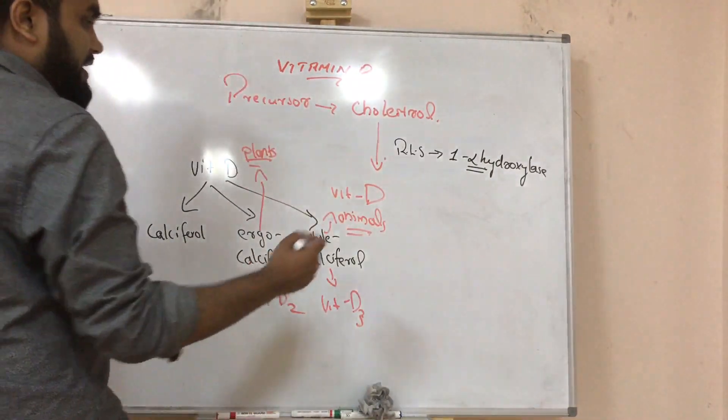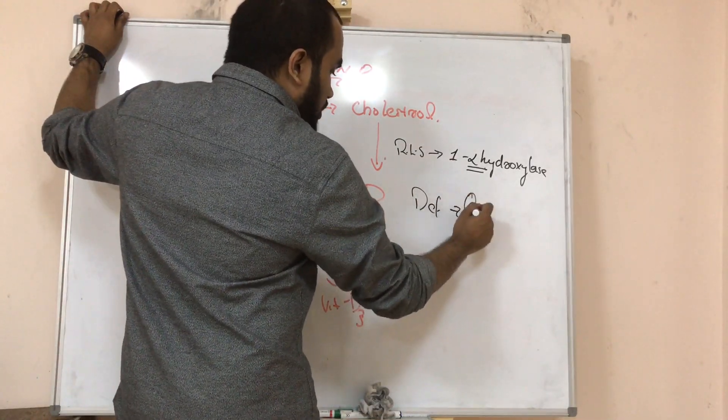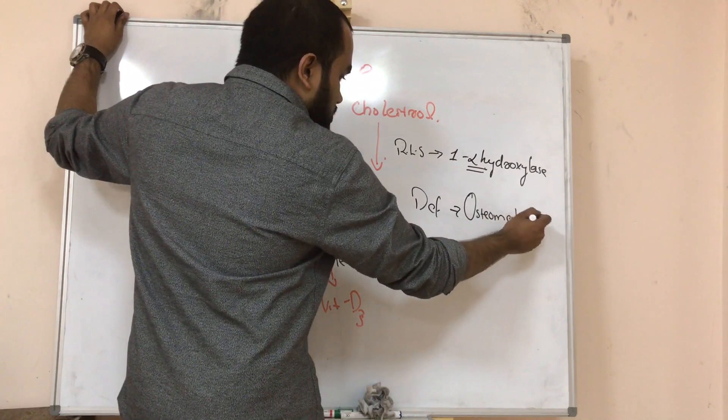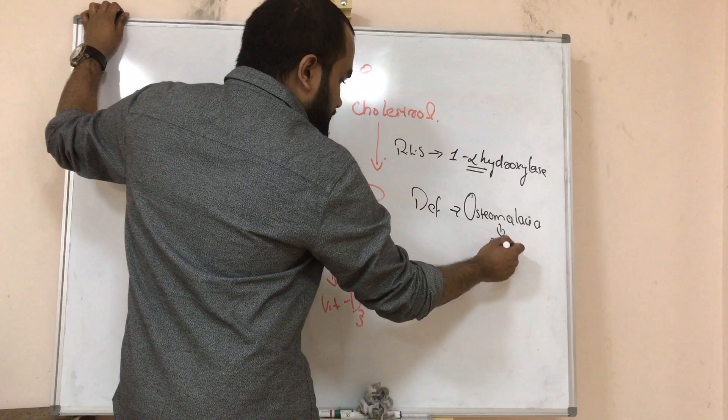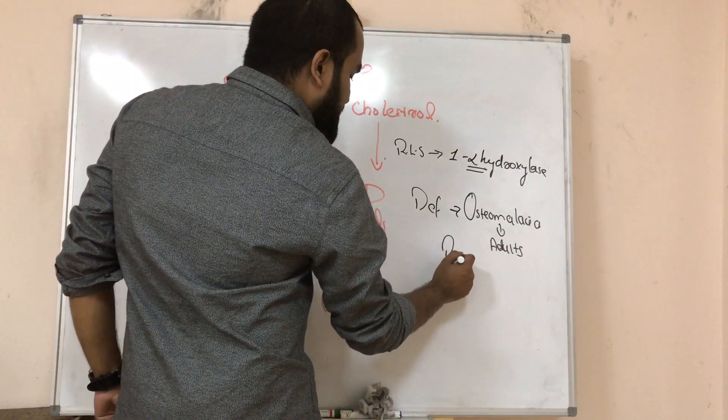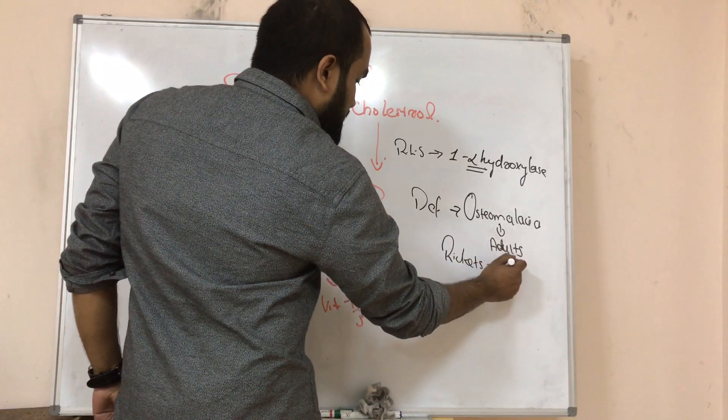Deficiency of vitamin D causes softening of bone, that is called osteomalacia in adults and rickets in children.